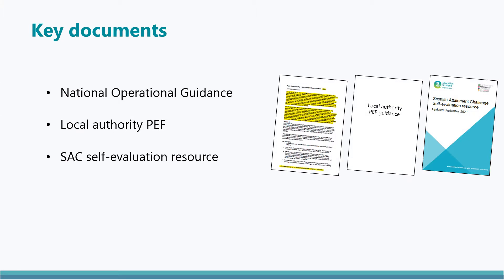Sources of support for schools in relation to PEF include the following documents: the PEF National Operational Guidance issued by the Scottish Government each year, complementary guidance from your local authority, and the Scottish Attainment Challenge Self-Evaluation Resource, which provides features of effective practice and challenge questions in relation to effective use of PEF. The National Improvement Hub is a further source of support, and schools may find it helpful to familiarise themselves with these sources ahead of any further PEF planning discussions.